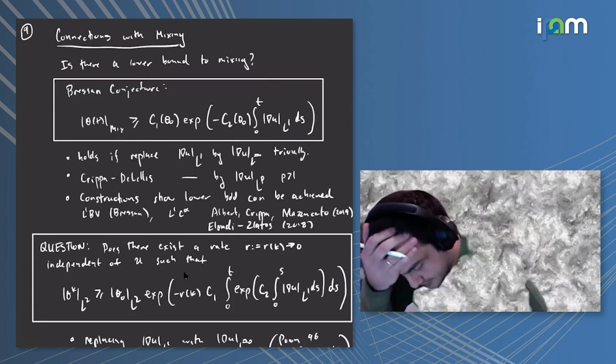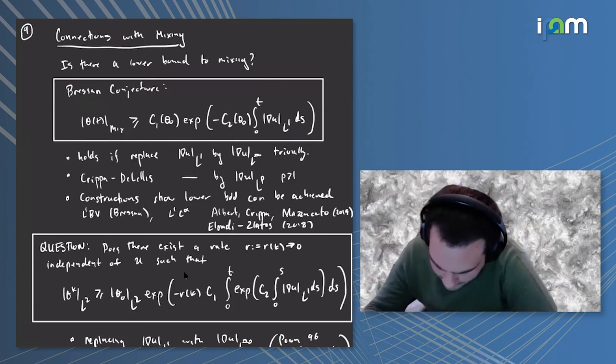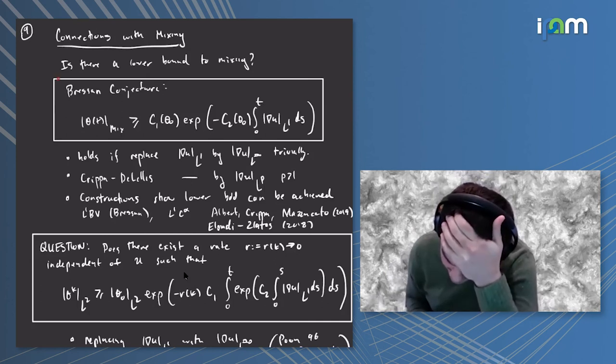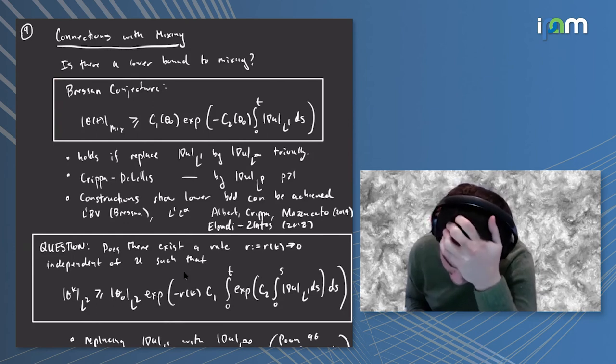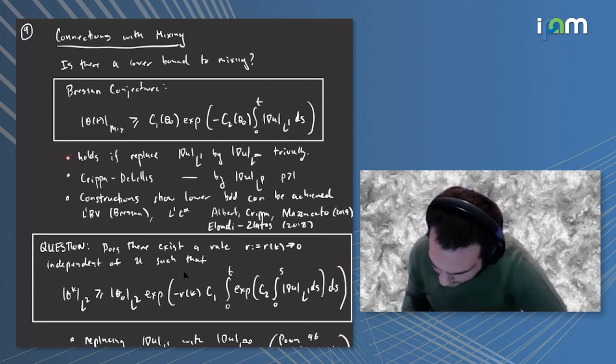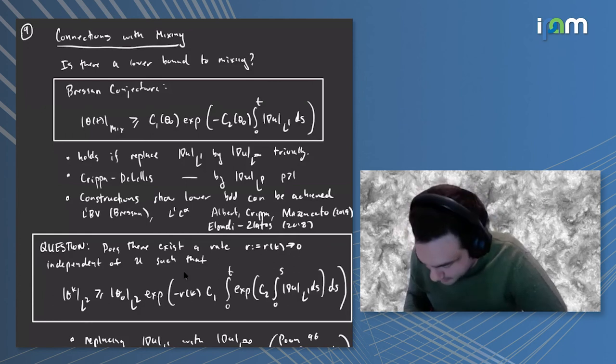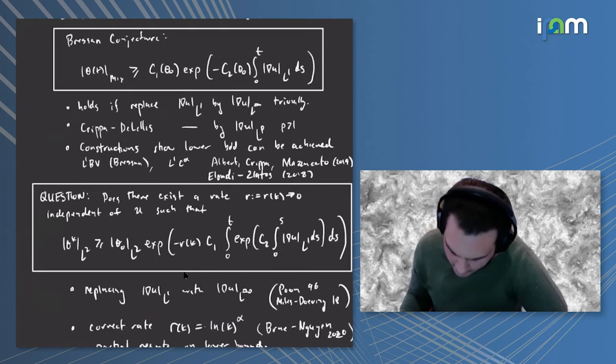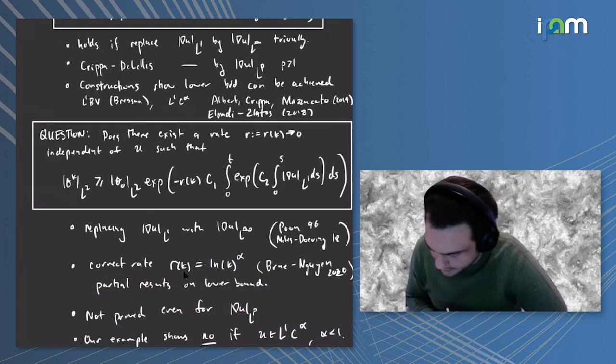Now I want to make a couple of remarks about some context and open directions. There's this famous conjecture by Bressan which is a quantitative lower bound on the mixing norm involving the L1 norm of the gradient of the drift. If you replace L1 by L∞, this is a simple consequence of Gronwall. There was work by Crippa and De Lellis that replaced in this lower bound L1 by Lp for p just bigger than one. There are also examples by Anna among others which show that this lower bound can be achieved. We would like to propose a similar type of quantification.